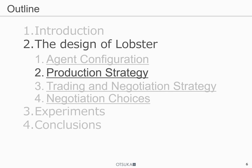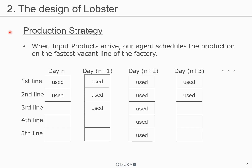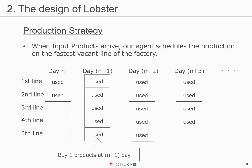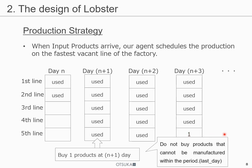Now, let me talk about our production strategy. When input products arrive, our agent schedules the production on the furthest vacant line of the factory. Suppose that one product is purchased on day N+1. Then, both day N+1 and N+2 are full. So we schedule the rest for day N+3. We don't buy products that cannot be manufactured within the period. The deadline will be explained later.